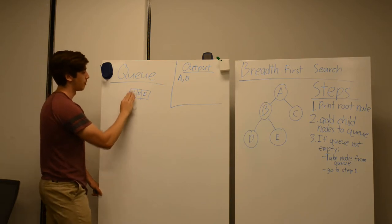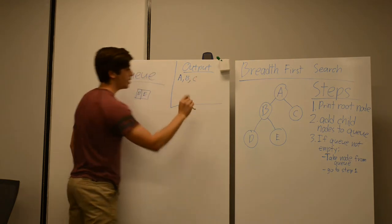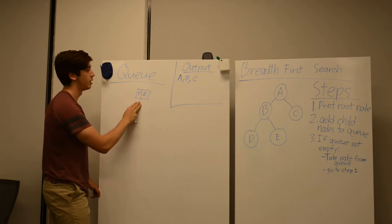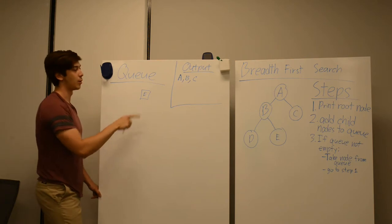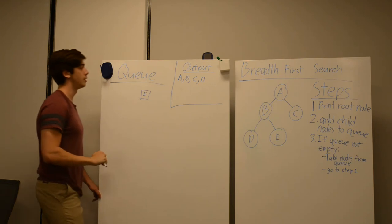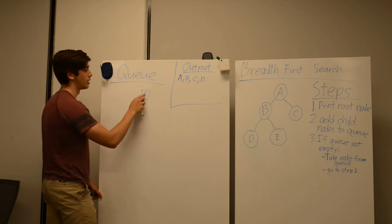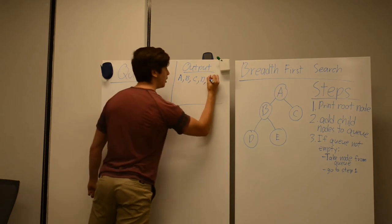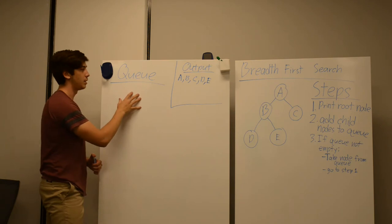Then we're going to take C off the queue and start working with C. So we're going to print out C. Since C is a leaf node and has no children, there's nothing to be added to the queue. So in step three we take D, go back to step one for D, which is outputting D. D is also a leaf node and has no children. Then in step three we take E off and print E. E is a leaf node, so nothing is added to the queue. Now that the queue is empty, the algorithm is complete.